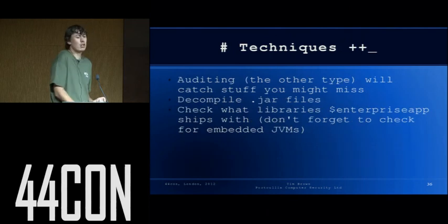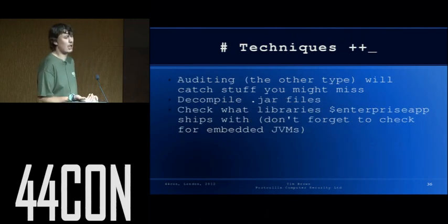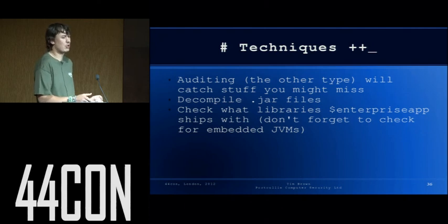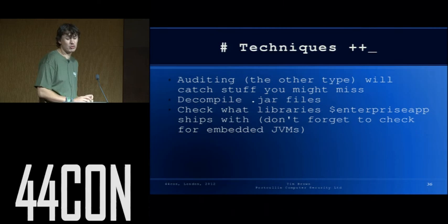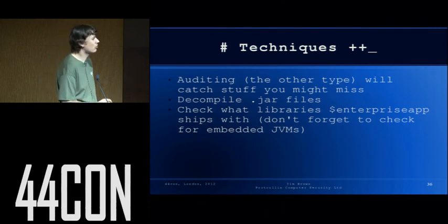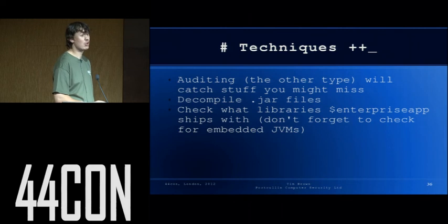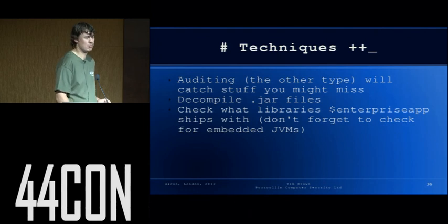More techniques. Auditing — the other kind — is quite useful. On AIX you have auditd; on Solaris you have BSM auditing; on Linux you have auditd. Turn it on while you're building the system and look at what's actually occurring, because things like creating files in /tmp can often be quick and they might have predictable names — if you know the predictable name, you might get root. Check what libraries enterprise apps ship with, particularly JVMs. The virtual machine I use for IBM work has MQ, DB2, and a couple of other bits and pieces. There are four different JVMs on there outside of the main Debian OS one, and they're all different — and probably vulnerable — versions.